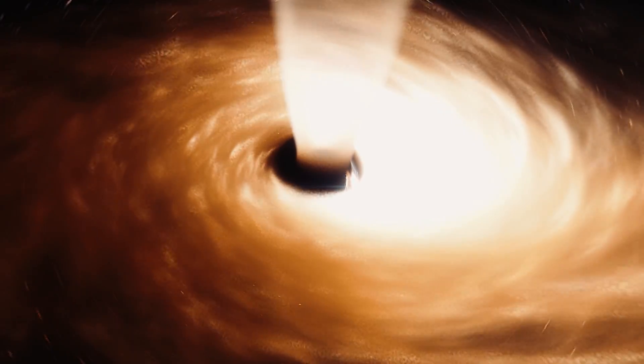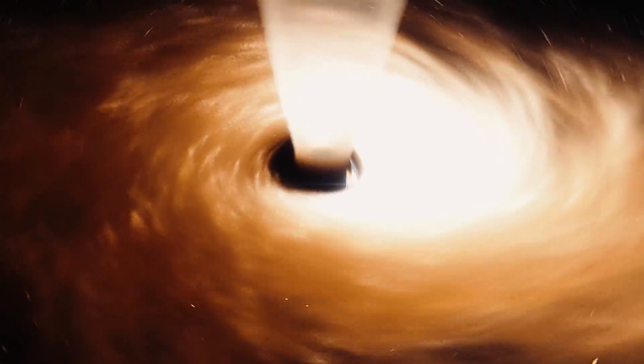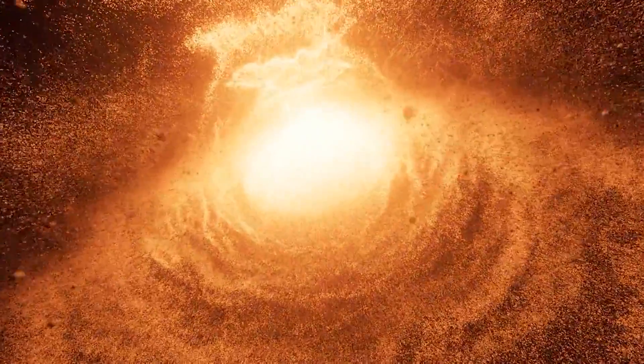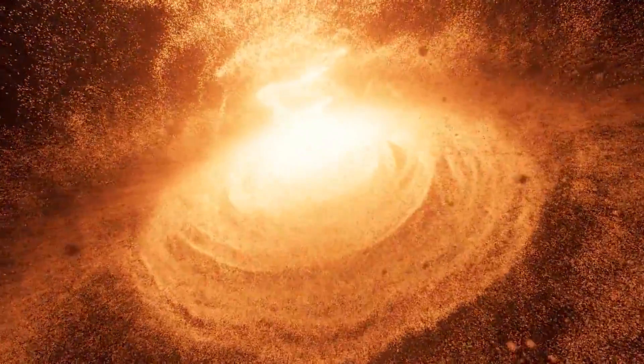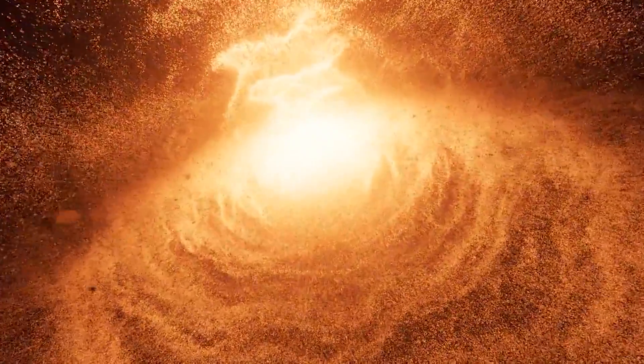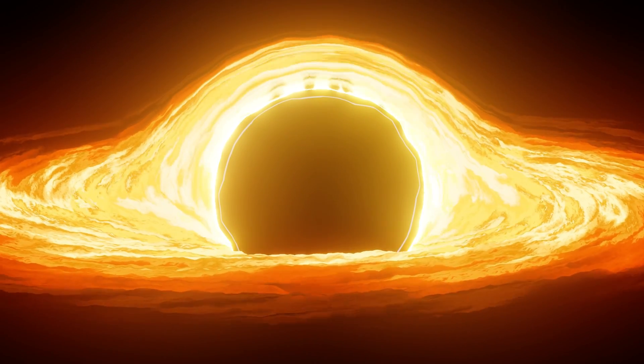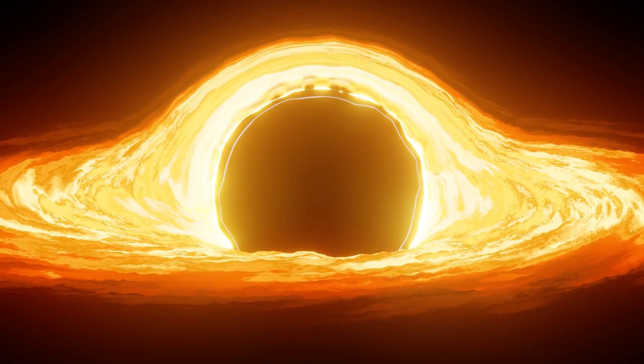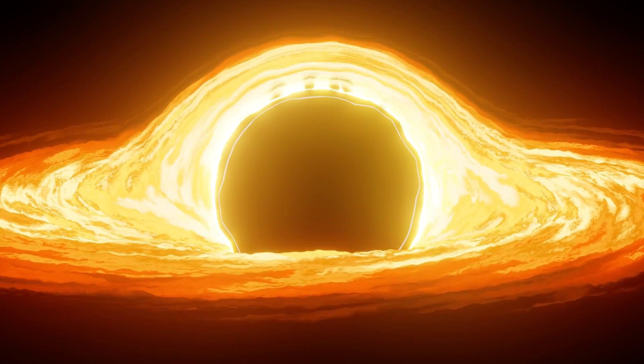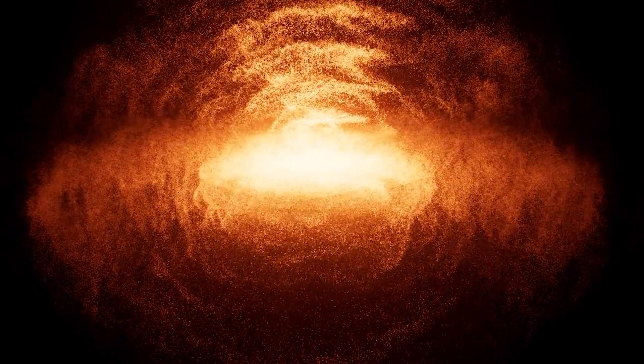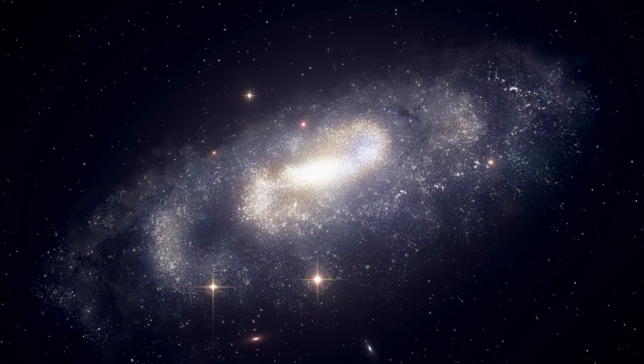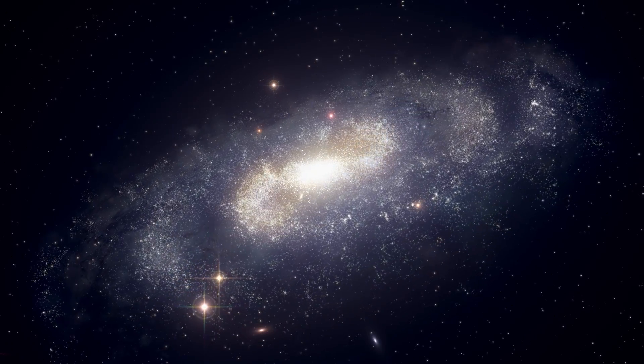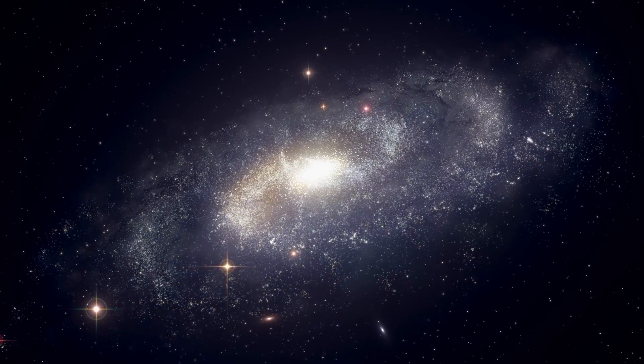To grasp the enormity of Ton 618, imagine a scale where our sun is a mere grain of sand. On this scale, Ton 618 would be a structure large enough to engulf multiple solar systems, a region of space so vast that light takes days to traverse from one side to the other. Its event horizon, the point of no return, stretches across billions of kilometers, a maw in spacetime that devours anything that dares to come too close. The existence of Ton 618 pushes the boundaries of what we thought possible, revealing a universe capable of producing structures of almost inconceivable scale and power. This black hole's gravitational influence extends across vast regions of space, dictating the motion of galaxies and bending the fabric of the cosmos itself.